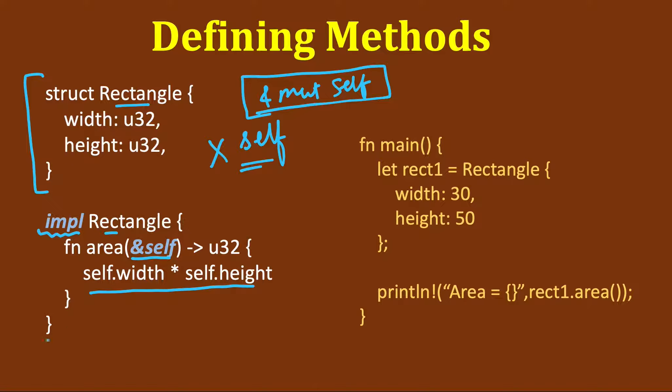And then these curly braces. It can have more functions, so fn area, fn perimeter, fn print. This one impl block will contain different functions.